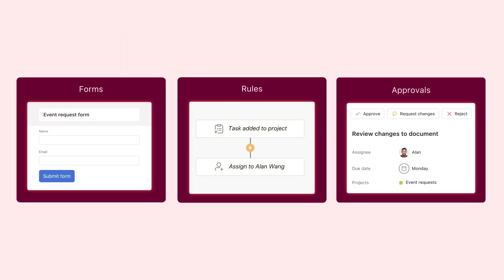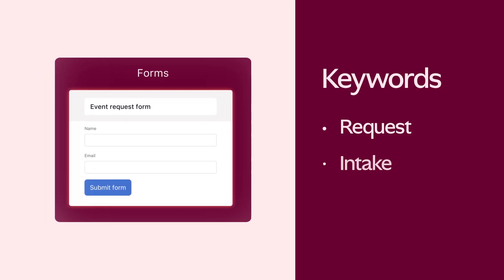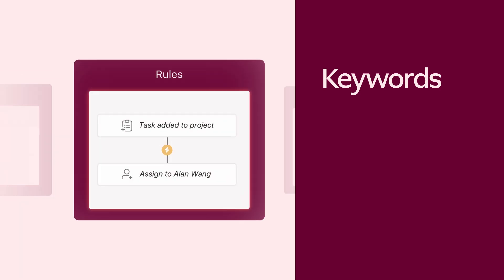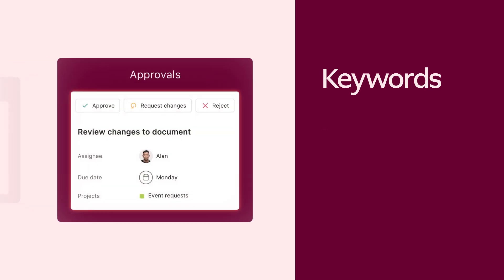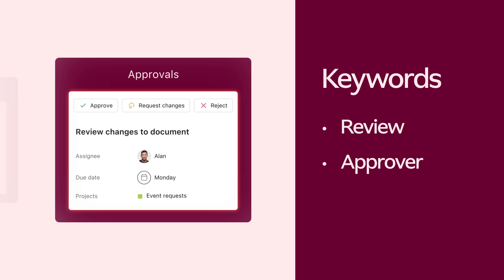Certain keywords can help you identify where to incorporate these features. Words like 'request,' 'intake,' or 'submit' often suggest forms can be useful. 'Manual,' 'always,' or 'repetition' hint at rules, while 'review' or 'approver' suggests using approvals.